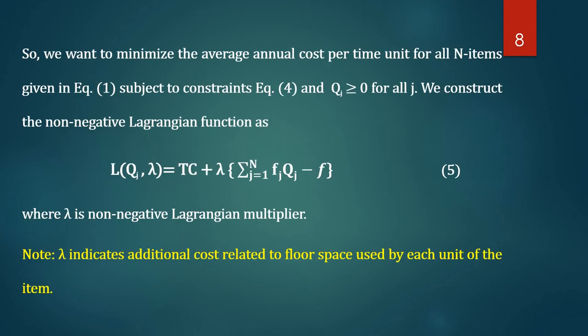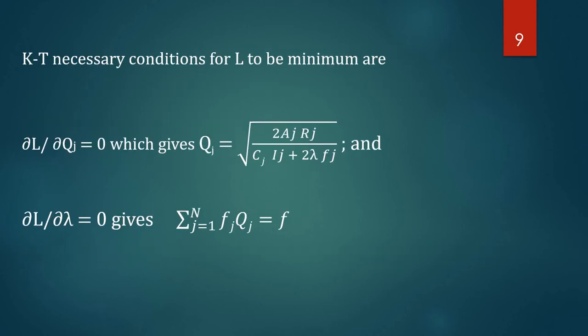We optimize the Lagrangian function with respect to Qj and λ. The necessary conditions for L to be minimum are: the partial derivative of L with respect to Qj set to zero gives Qj = sqrt(2·Aj·Rj / (Cj·Ij + 2·λ·fj)), and the partial derivative of L with respect to λ set to zero gives the floor constraint: sigma from j=1 to N of fj·Qj = F.